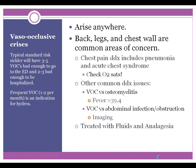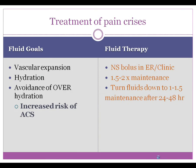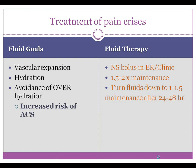We treat these kids with fluids and analgesia. Our fluid goals are to expand the vascular space, to break open those clumps of sickle cells, and to hydrate and help the body get rid of the hemolyzed debris from all those cells. But we also want to avoid overhydration, as overhydration turns into pulmonary edema even at low levels, and this increases your risk for acute chest syndrome, which is a common cause of death in both kids and adults.